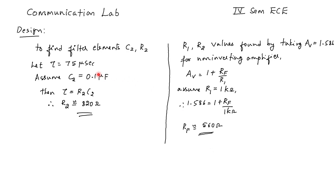In this circuit we are going to design the value of the filter elements, that is R2 and C2, and the value of the feedback resistor in op-amp configurations. We consider tau, the time constant, as 75 microseconds. Assuming C2 as 0.1 microfarad and substituting C2 and tau, we will approximately get the value of R2 as 8020 ohms.